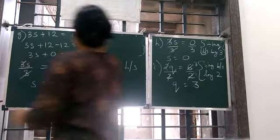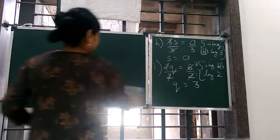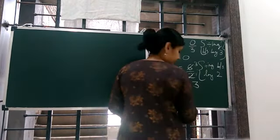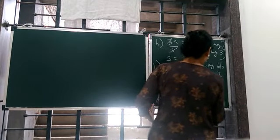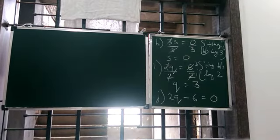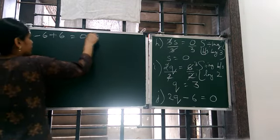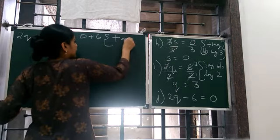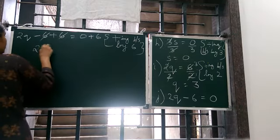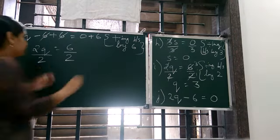Then we go to J. 2q minus 6 is equal to 0. So what to do? First we remove 6. It is minus, so we will do plus. 2q minus 6 plus 6 is equal to 0 plus 6. And what to write here? Adding both sides by 6.